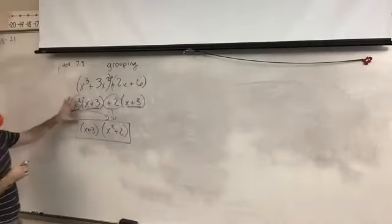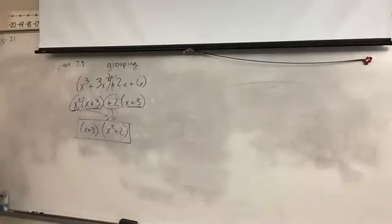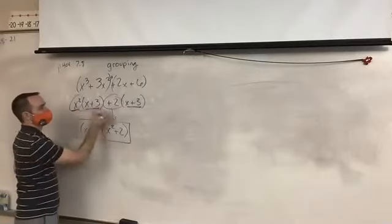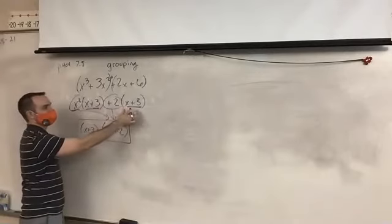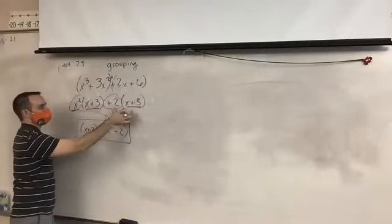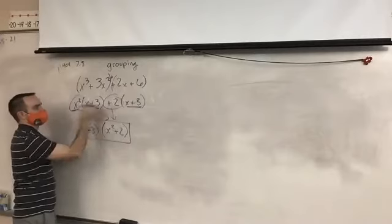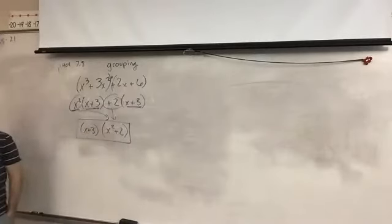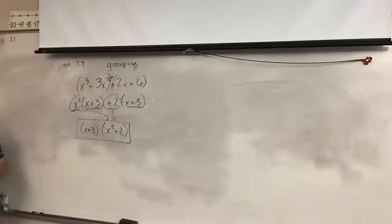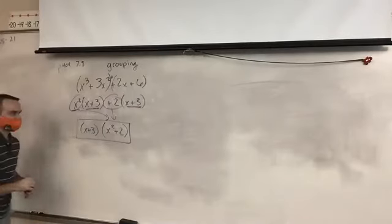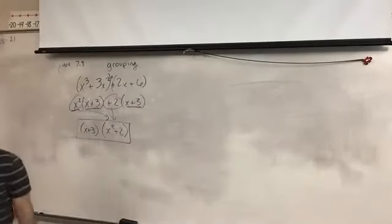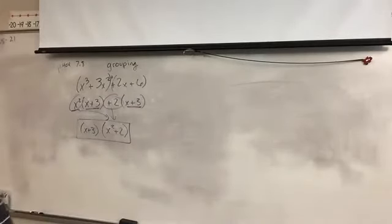So we've got our process: group by the GCF of each half, whatever's left over — if it's the same in both groups — we combine that into one set of parentheses, and what was out front goes into the other. Let's walk through one more together and then I'll have you do some on your own.